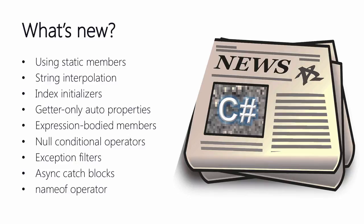Let's quickly go through the list of new things. Using static members will help us to reduce the amount of code that we have to write. String interpolation will simplify the situations where we use string.format. If you have ever tried to initialize a dictionary with some values, then you will appreciate index initializers. If your app has a lot of small entity objects, getter-only auto properties will simplify the initialization of those.